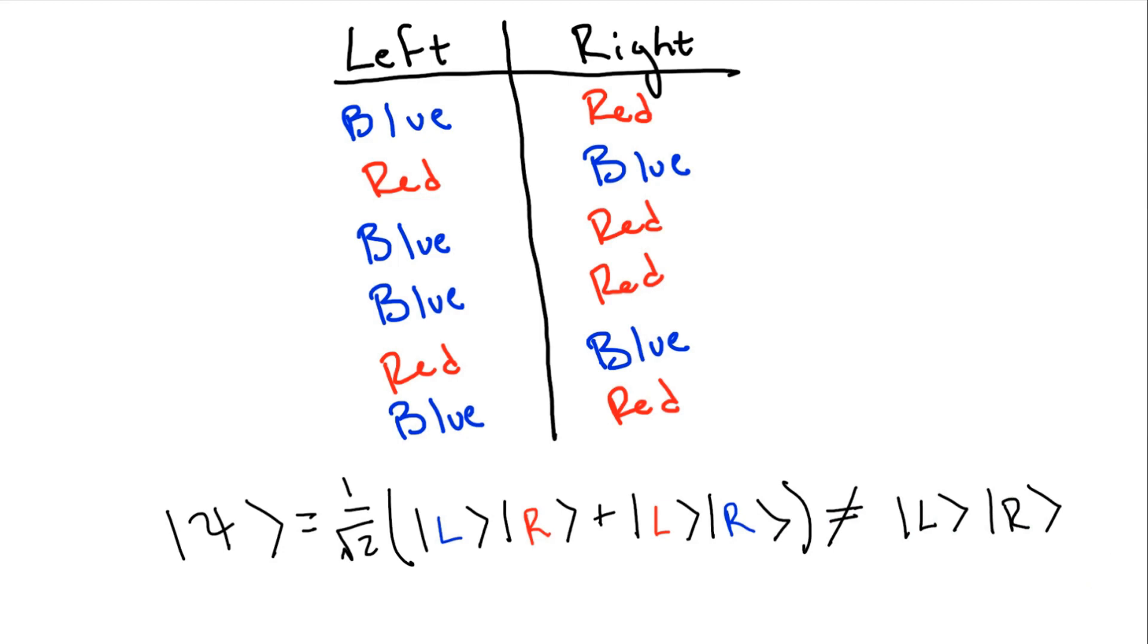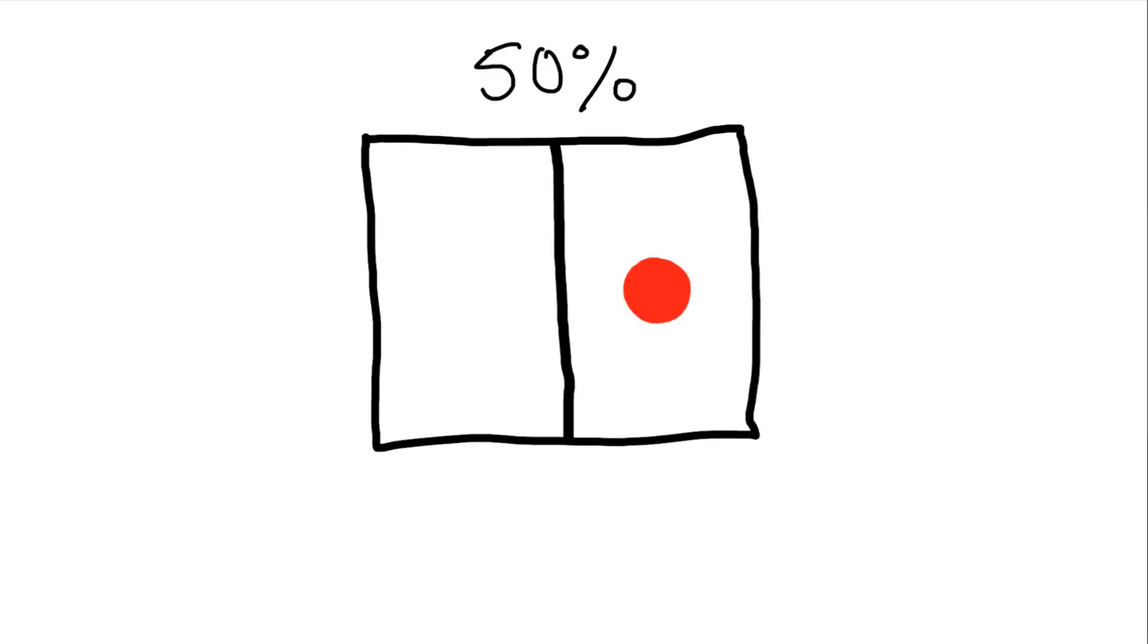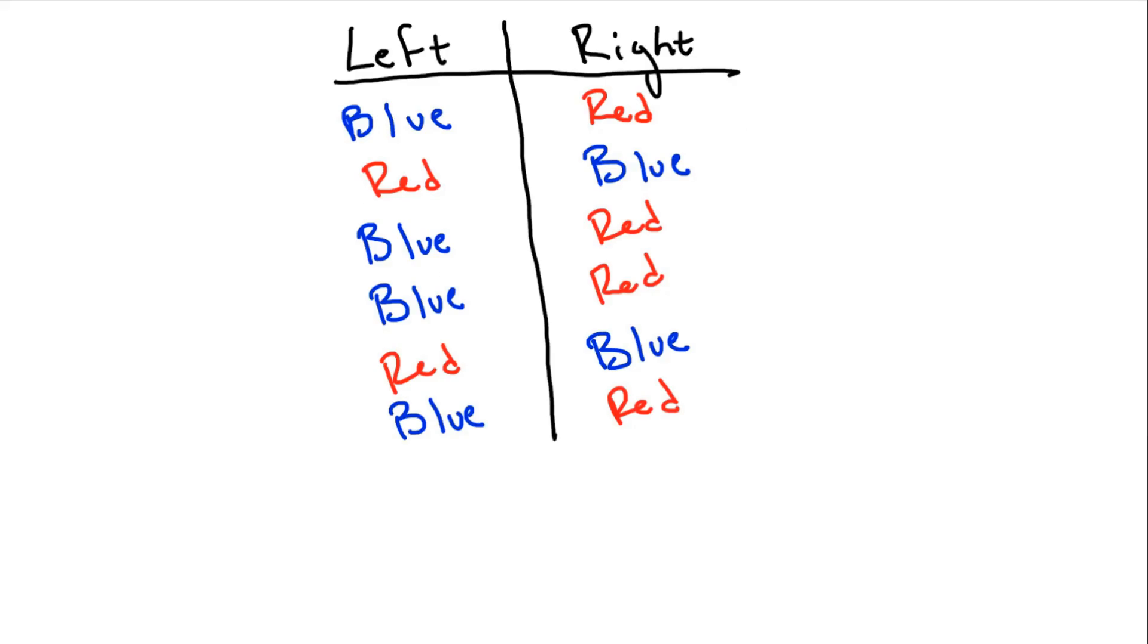Okay, so where does the misconception come into play? Well, say I only open the right-hand side of the box at first, then write down the color of the ball. I would measure red 50% of the time, and blue 50% of the time. However, when I open the left-hand side of the box, I measure the color to be opposite from that on the right-hand side 100% of the time.